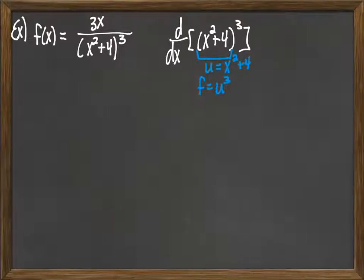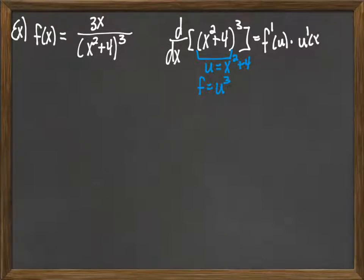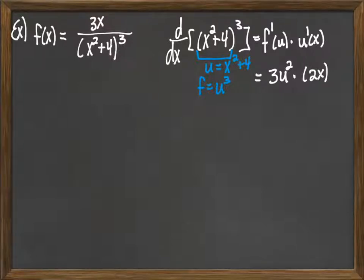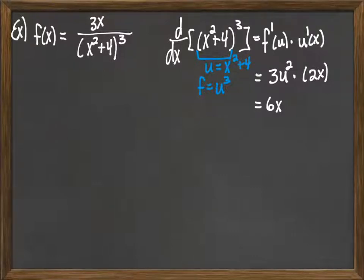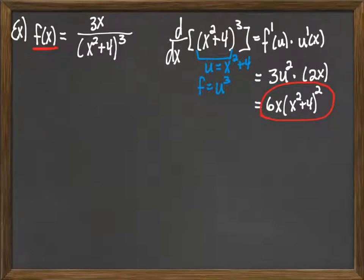If I replace that with u, then I have u cubed, so f equals u cubed. We invoke the chain rule: f prime of u times u prime of x. f is u to the third, so that's 3u squared by the power rule. Then we differentiate the inside: derivative of x squared plus 4 is 2x. Putting the 2 and 3 together gives 6x, times u squared. But u is x squared plus 4, so we write that as 6x times (x squared plus 4) squared.